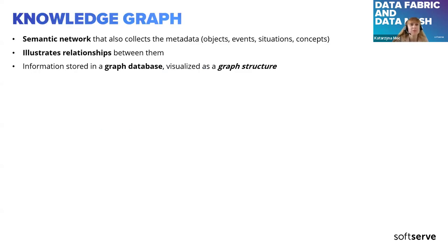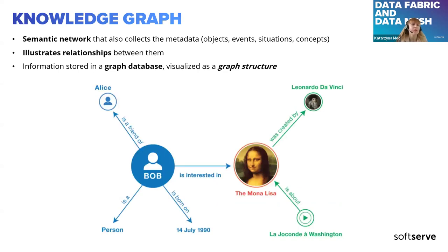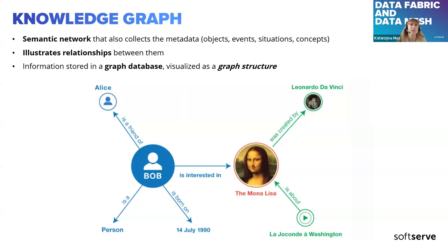The knowledge graph is a semantic network that collects metadata — for example, different objects, events, situations, and concepts — and illustrates them graphically with the right relationships between them. Such information is stored in a graph database and visualized as a graph structure. Because it is mapped graphically, it provides a lot of visual perspective and information that can easily be remembered.